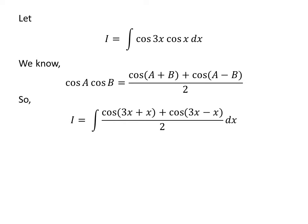I have replaced cosine of 3 times x times cosine of x in the integral by its value as per the above trigonometry identity. So, i is equal to the integral of cosine of 3 times x plus x, plus cosine of 3 times x minus x, upon 2, with respect to x.